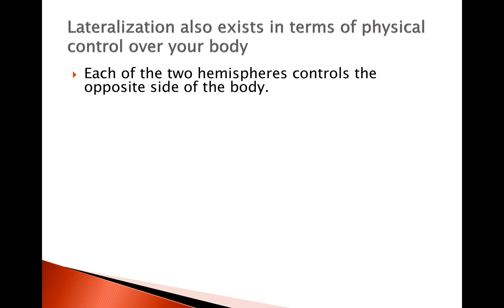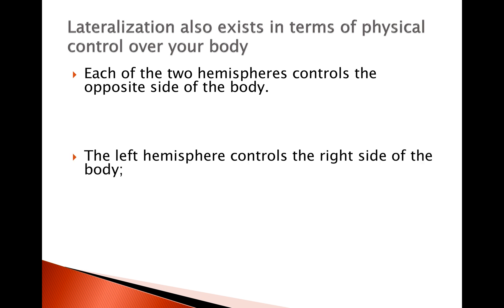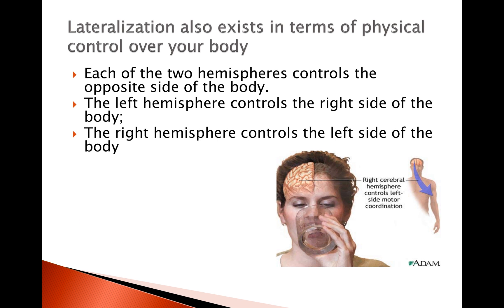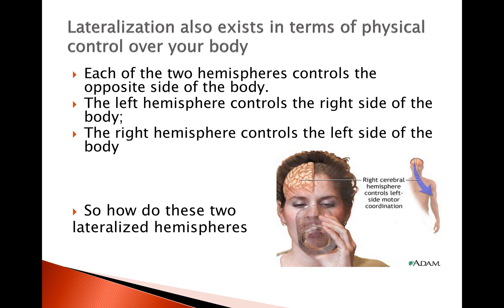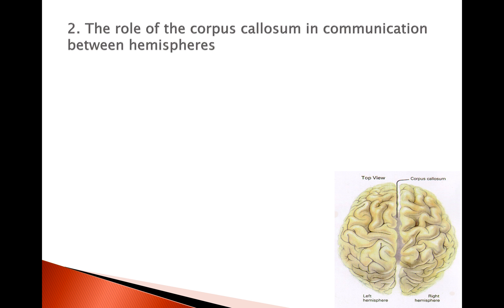Lateralization also exists in terms of physical control. Your left hemisphere controls the right half of the body, and the right hemisphere controls the left half of the body. So how do these two lateralized hemispheres communicate? This thick fibrous band — the corpus callosum — helps the two hemispheres pass information between them.